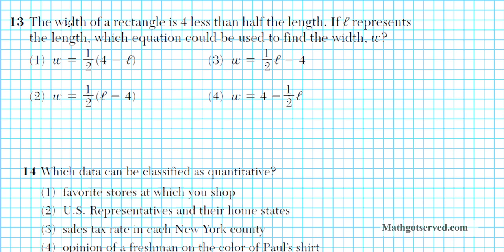So you have here the width w of the rectangle is 4 less than half the length. So the length is l and the width is w. So we have the width of the rectangle is, we can just write that as w equals. If you look at the four options, you have w equals first. This means w is.